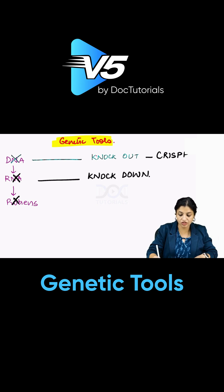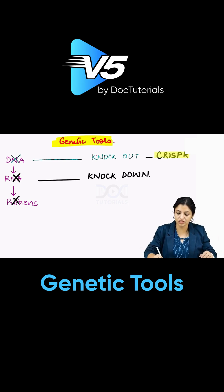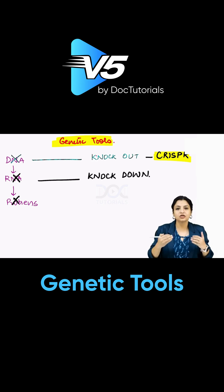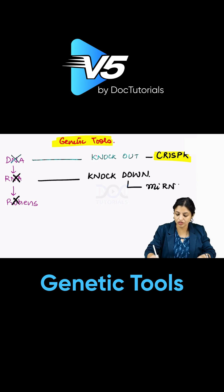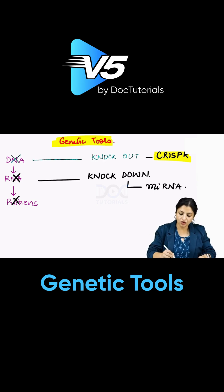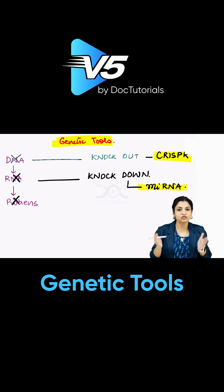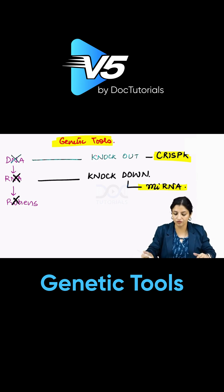If you change the DNA, it is not going to revert. This is done by a molecule called CRISPR. Whereas when you change the RNA, you have not cut the DNA — so this is a temporary modification, and it is usually done by micro RNAs. So micro RNA does knockdown technology, and CRISPR does knockout technology.